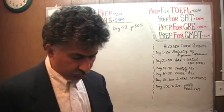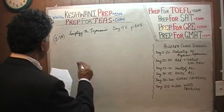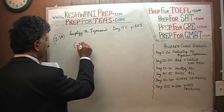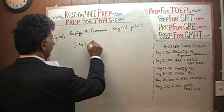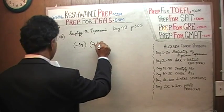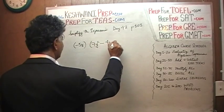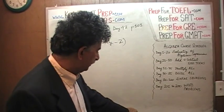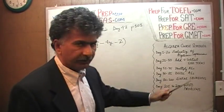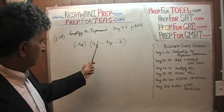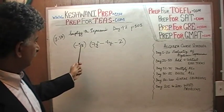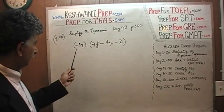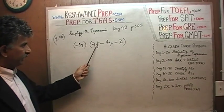Let's do the next one. Problem 2.54 is: negative 5y times 7y squared minus 4y minus 2. We are multiplying an algebraic expression. The second expression has three terms but the first expression has only one term, which makes our life very easy — you just have to multiply negative 5y by each of these terms.